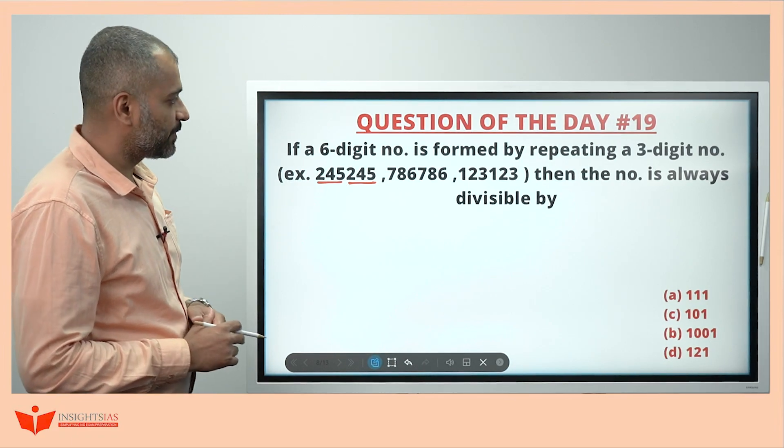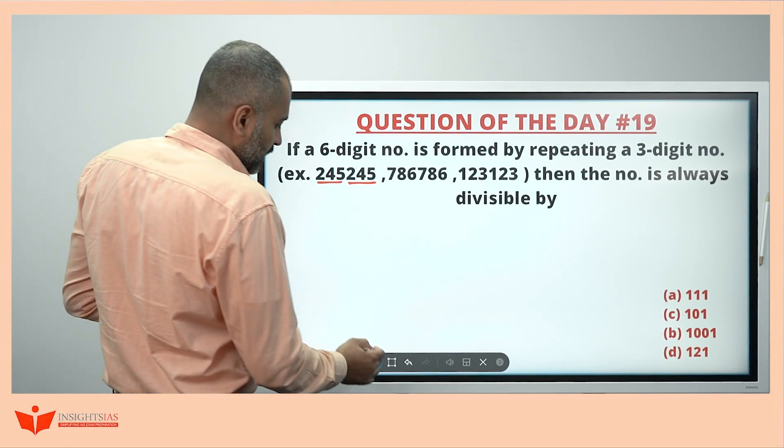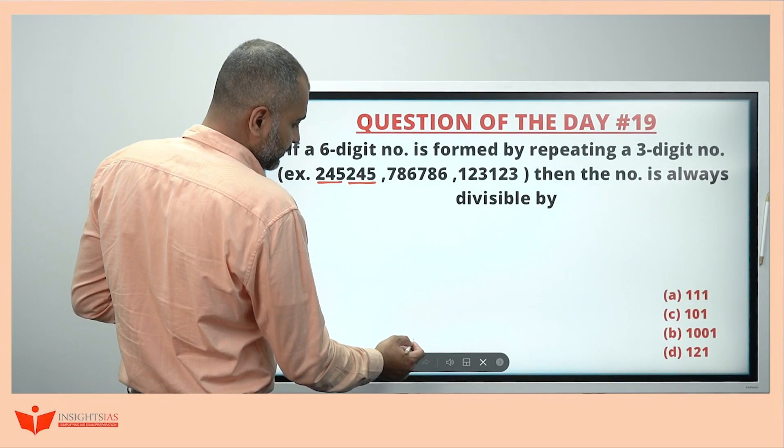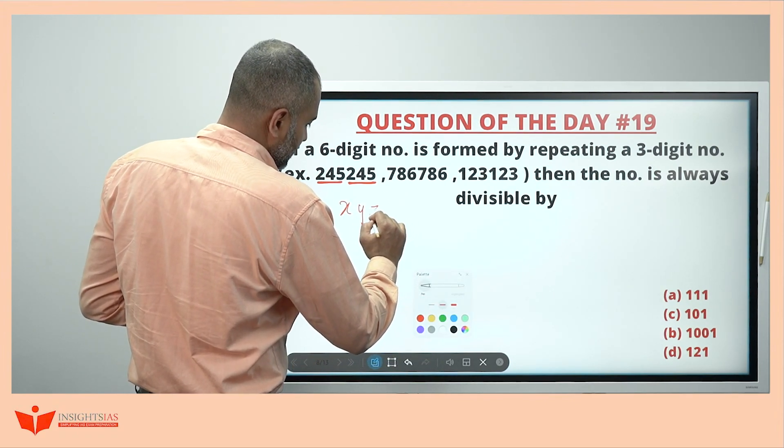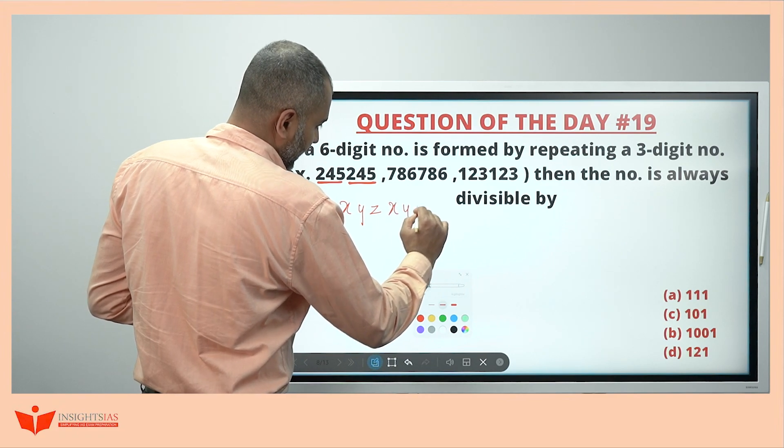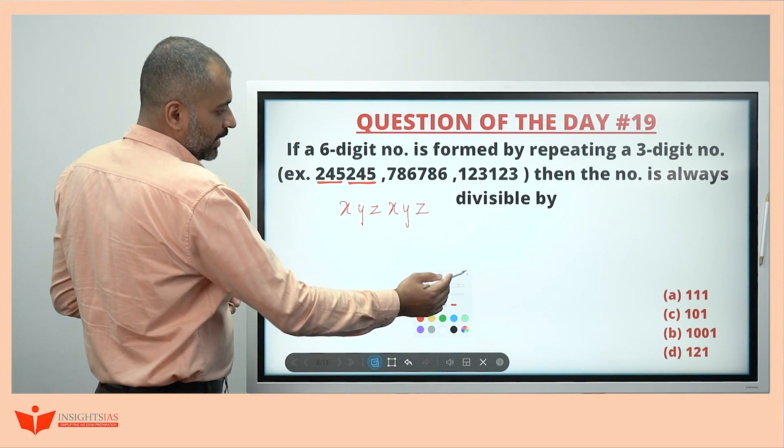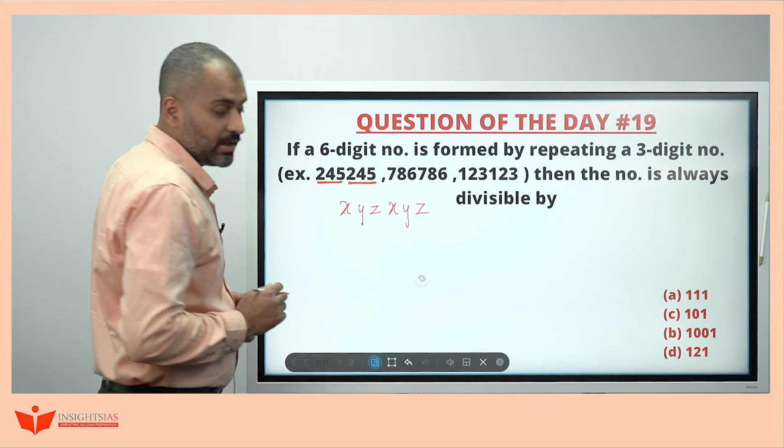This is a very standard question. Look here now. Let us assume the number as x, y, z and also repeating x, y, z, where x, y, z, x, y, z are the digits.